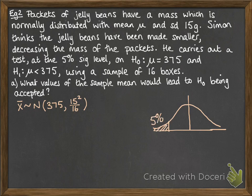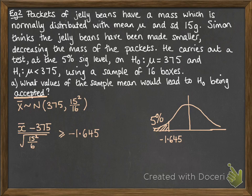So we are doing a 5% significance level on a one-tail test. That gives us a z-value of minus 1.645. So if we standardize our test statistic, we're looking for the acceptance, so we want it to be more than the minus 1.645. Rearrange that and we get 368.83 for our sample mean. So anything above that would lead to our null hypothesis being accepted.